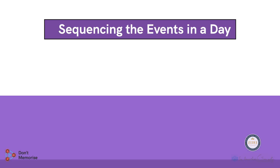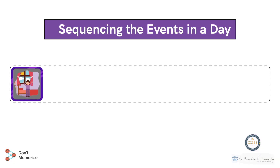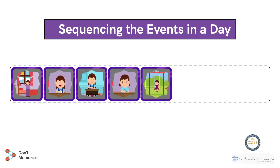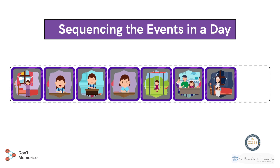First will be the picture card of the girl getting up with the rising sun. Second will be the girl wearing her school uniform at home and having milk and biscuits. Third comes the girl sitting in the classroom. Fourth will be the girl studying at her home. Fifth would be the girl playing in the park in the evening. Sixth will be the girl having her dinner with other family members. Seventh will be the girl listening to stories from her grandmother. And last would be the girl sleeping in bed with the moon in the sky.